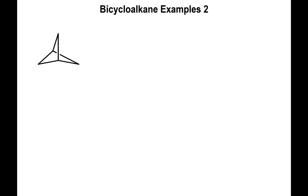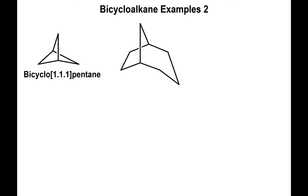Now let's look at bicycloalkanes where you actually have carbons above the bridge heads. In this molecule, the bridge heads correspond to the carbon on the front and the carbon at the back. To the left we have one carbon, to the right we have one carbon, and on top we have one carbon, so this is bicyclo[1.1.1]. Adding those numbers together and adding two gives a total of five: this is bicyclopentane. Over here, we have two carbons to the left, three carbons to the right, and one carbon on top, so this is bicyclo[3.2.1]. Three plus two plus one plus two equals eight: this is bicyclooctane.